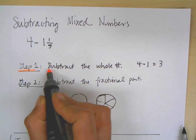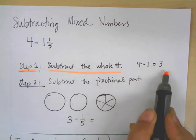So first off, the first step is just to subtract the whole number. So 4 minus 1, 4 minus 1 is 3.